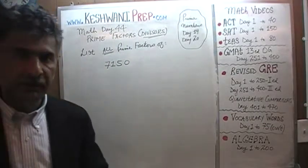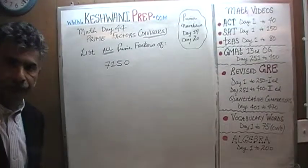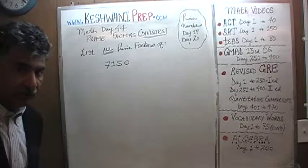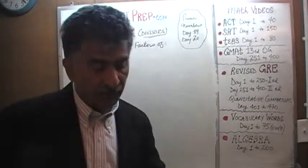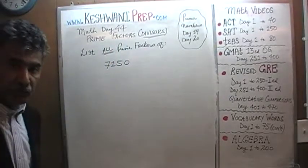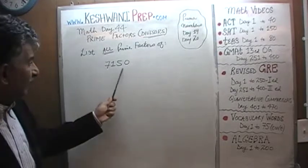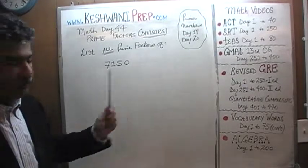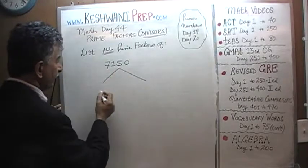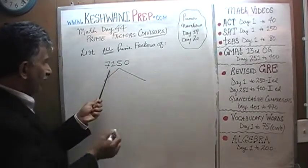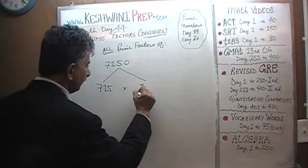I assume that you know the basic concepts. What are we going to do? We learned how to find factors of 10. Factors of 10 are very easy. If something ends in a zero or a bunch of zeros, we separate the quantity without a zero from the quantity with a zero. So 7,150 can be written as 715 times 10.